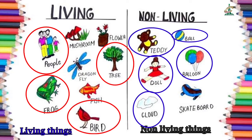Living things — ہم ان چیزوں کو کہتے ہیں جو کہ سانس لے سکتی ہیں، کھانا کھاتی ہیں، grow کرتی ہیں، اور reproduce کرتی ہیں۔ ان تمام چیزوں کو ہم living things کہتے ہیں۔ For example, آپ، میں، animals and plants — ہم سب سانس لیتے ہیں، کھانا کھاتے ہیں، move کرتے ہیں اور grow بھی کرتے ہیں۔ That is why we are living.